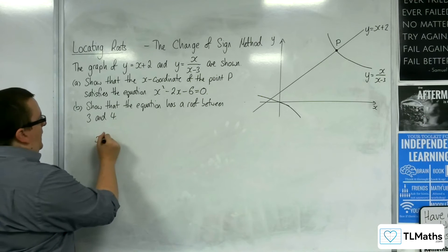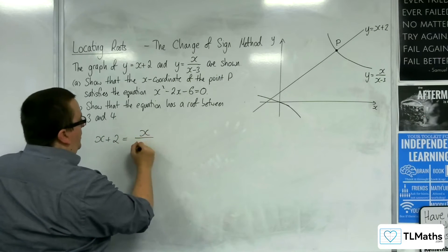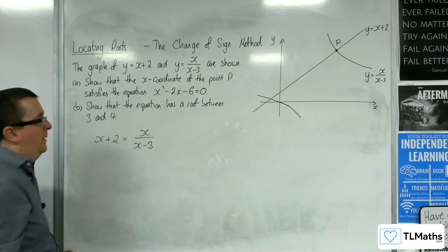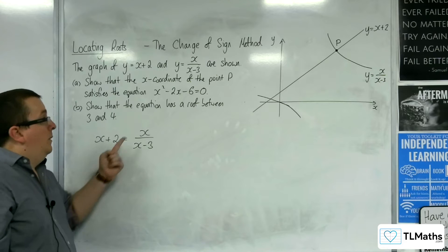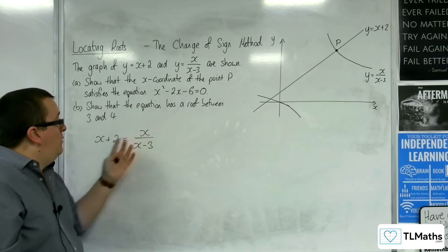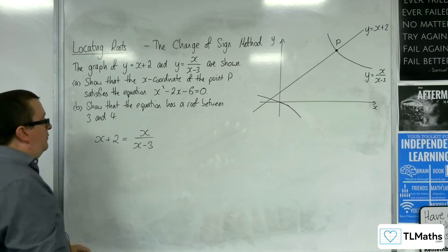So I'm going to put x + 2 equal to x/(x - 3). Because the x-coordinate of point P will satisfy this equation. It is a result of this equation being solved.